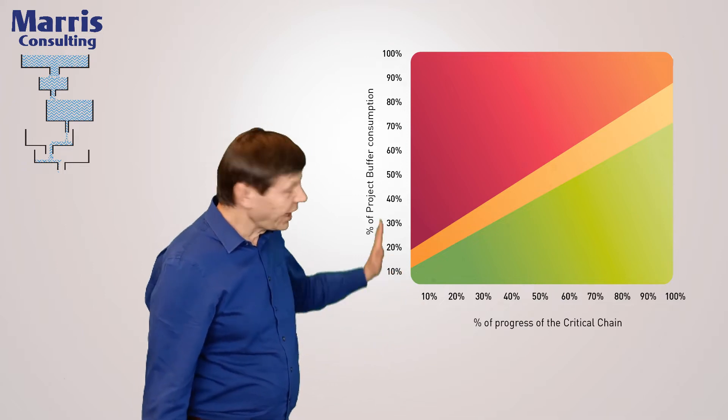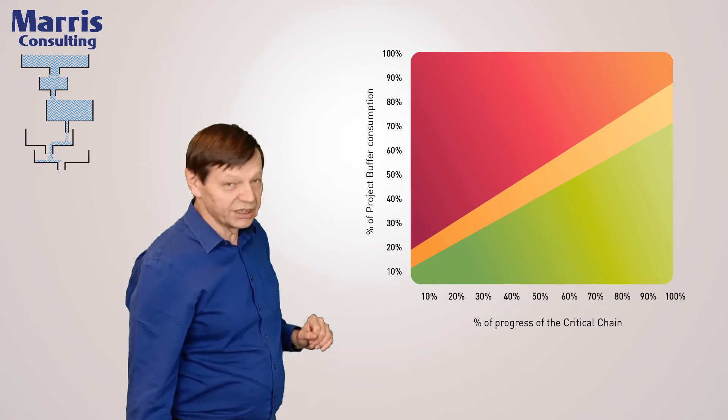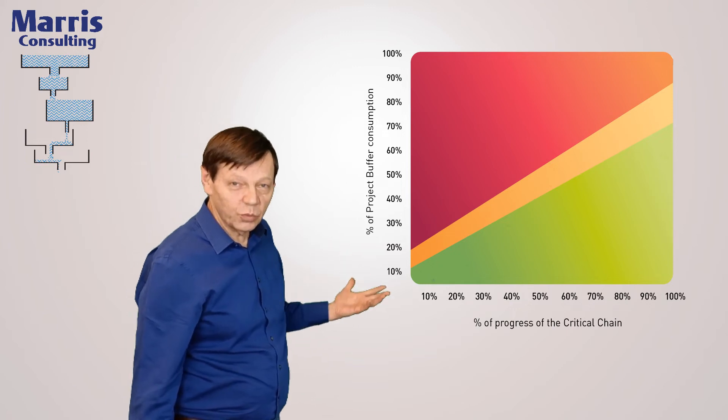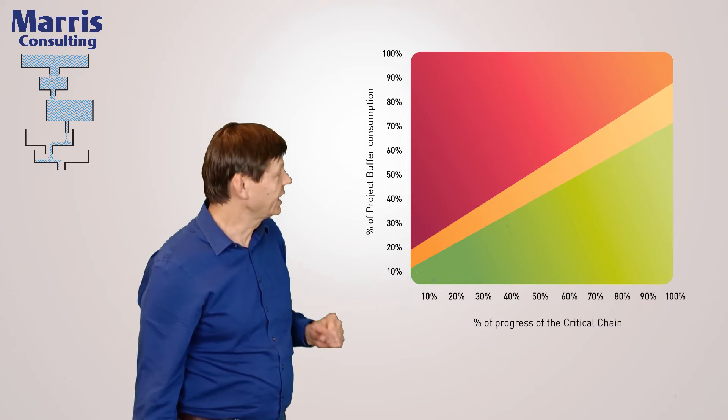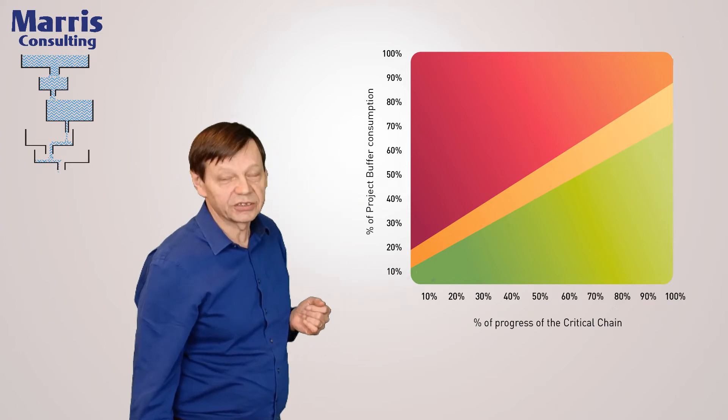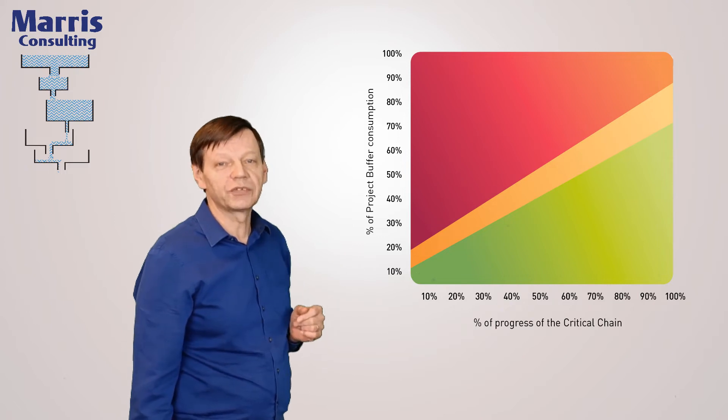So there is the other axis, the buffer, which is there to absorb the fact that we're going to go slower than the optimistic durations. It is big, that's to say that it's approximately one-third of the overall duration.